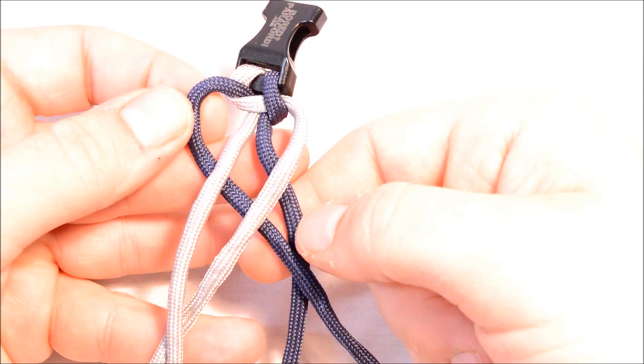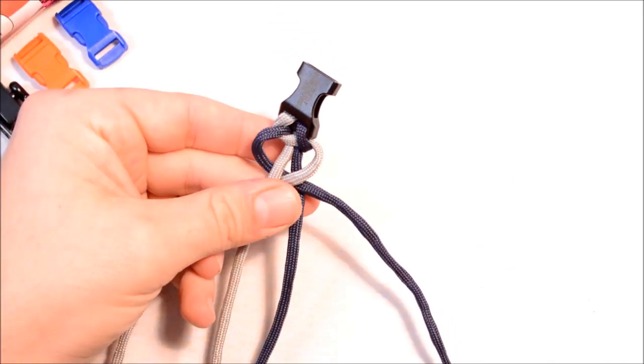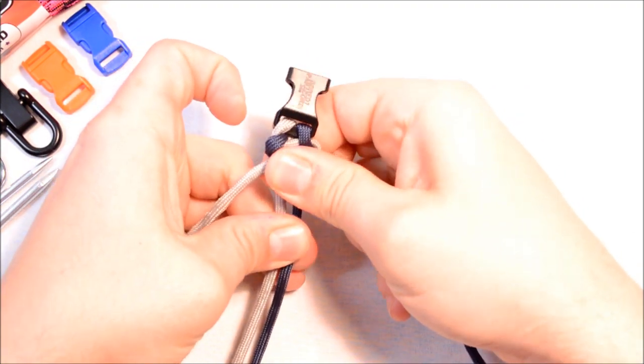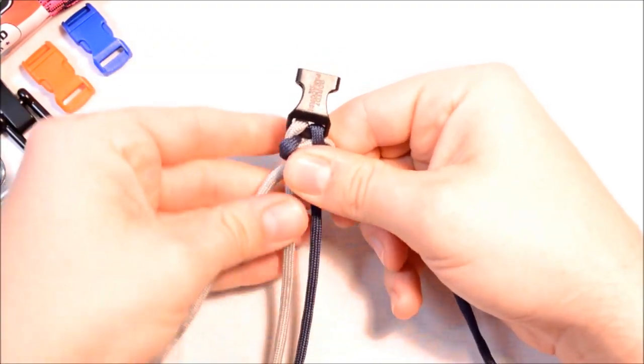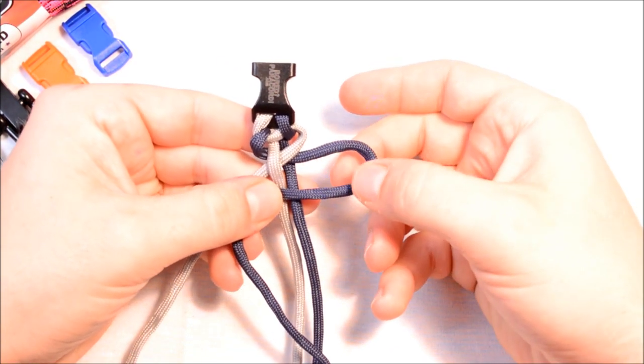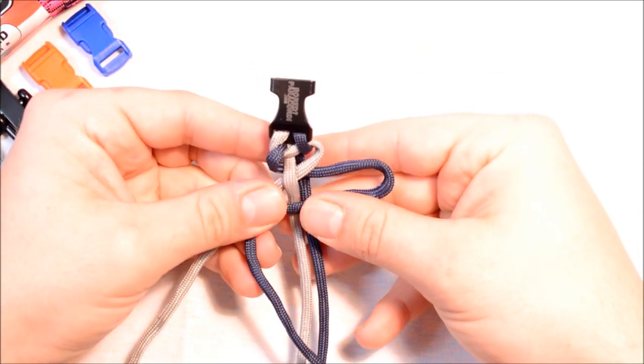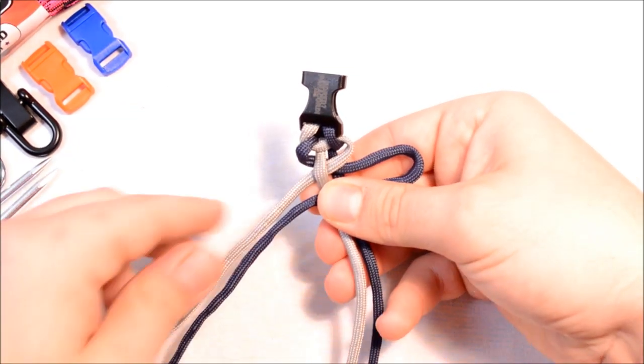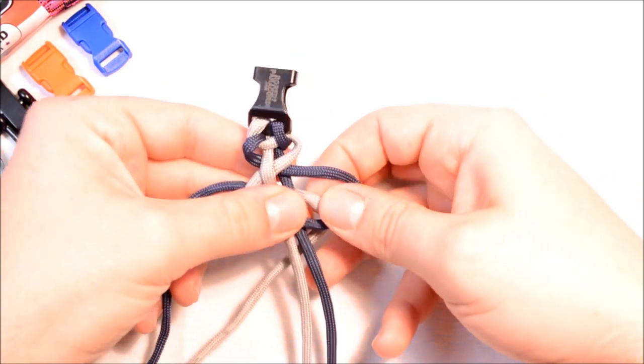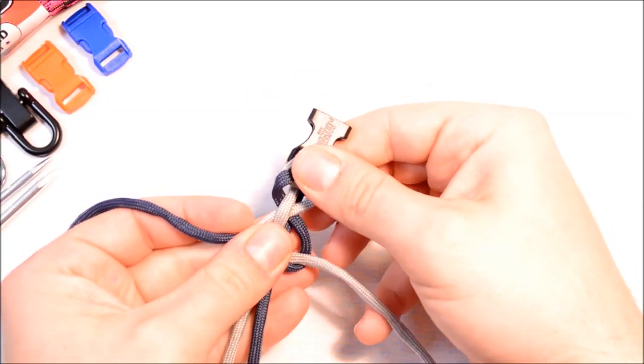Now what we're going to do: cinch that up just a little, it doesn't have to be done yet. We're going to do a solomon, but we're going to start with the other color now going over the top. So the cord that was on the left is now on the right, and you're going to do a solomon with that color. Take your silver over the blue, go around the back and up through the hole.